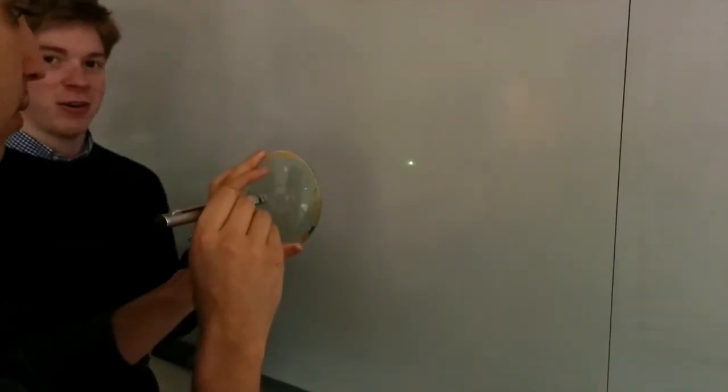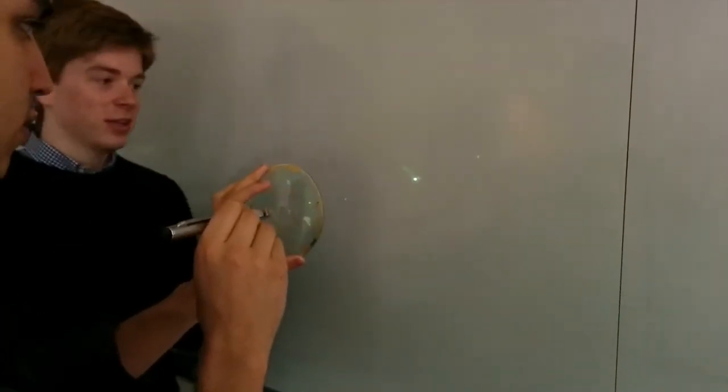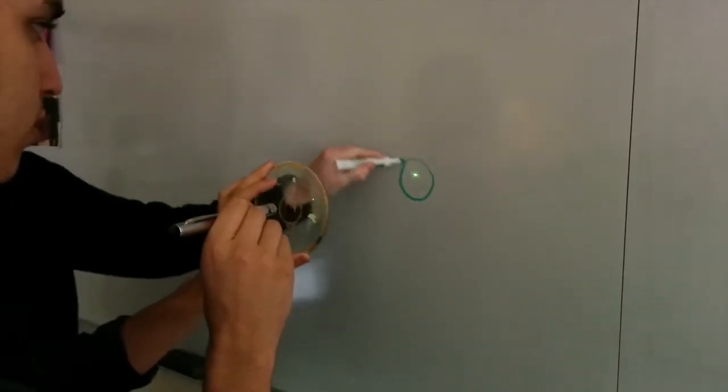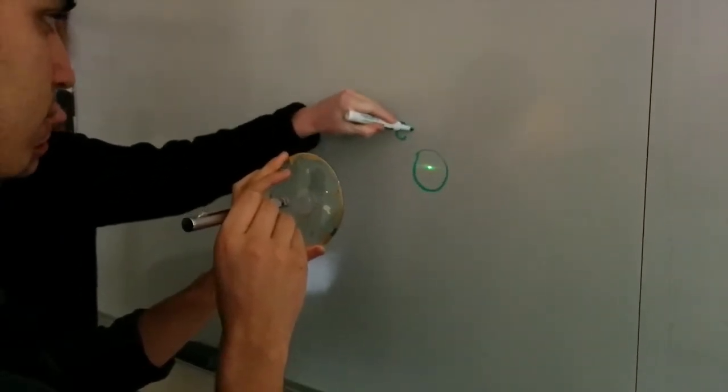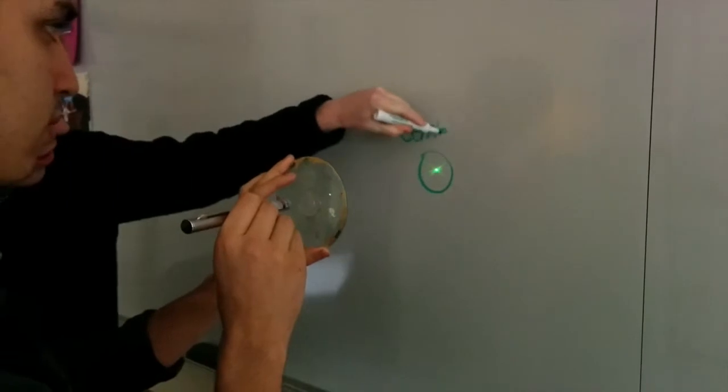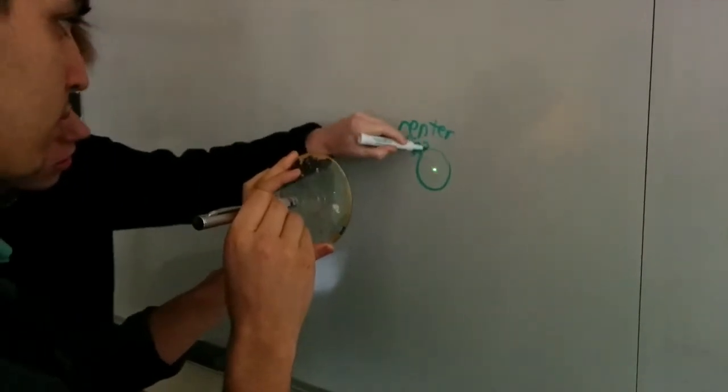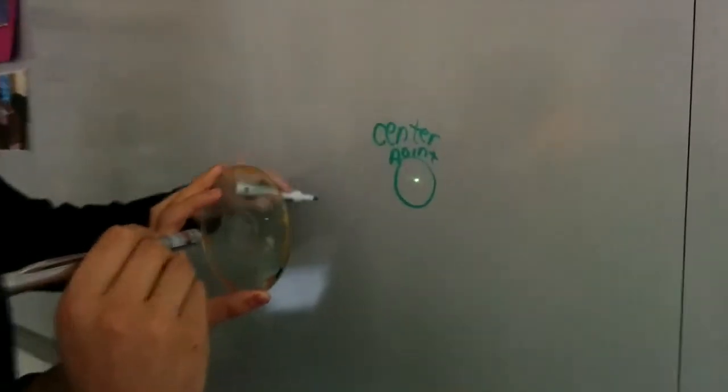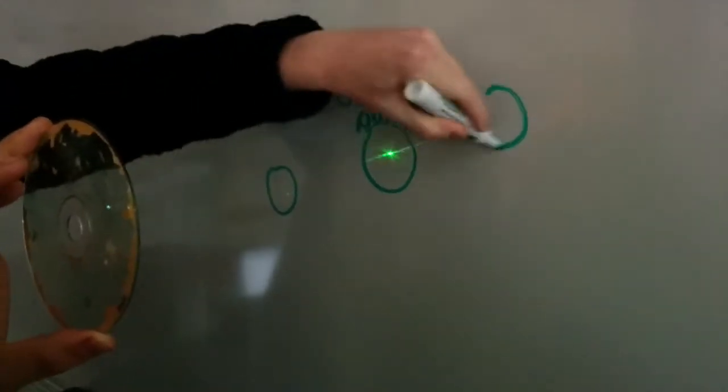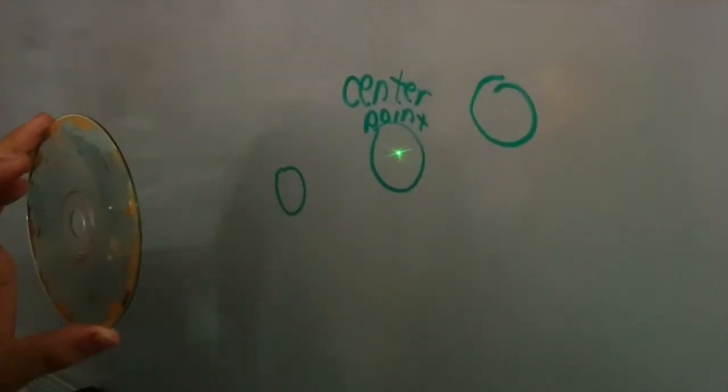So this is the diffraction pattern of a laser going through a CD. This is the center point, and then both of these points are the diffracted rays of light.